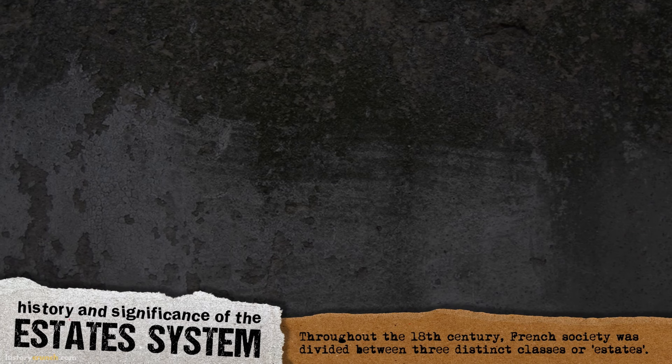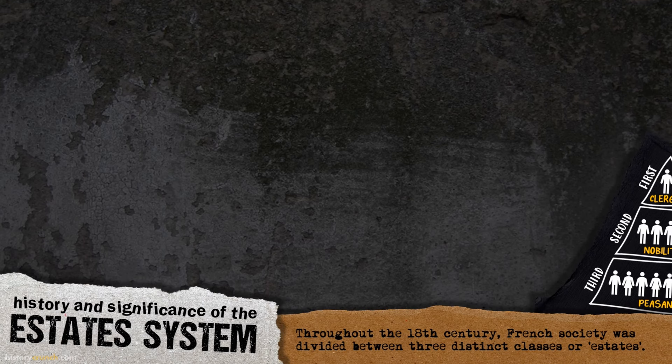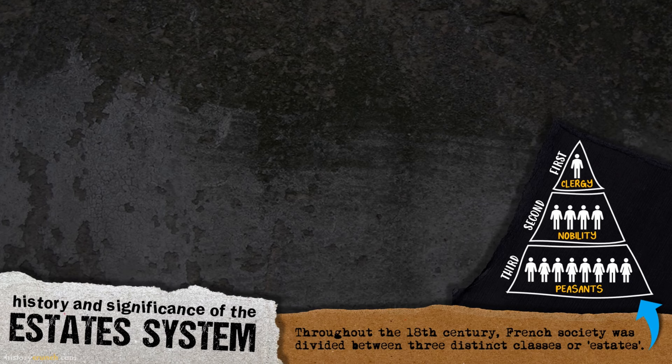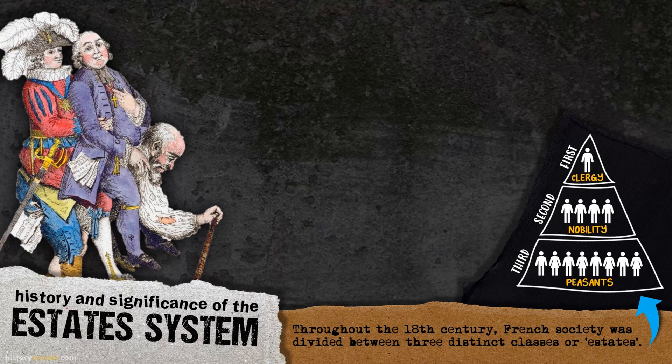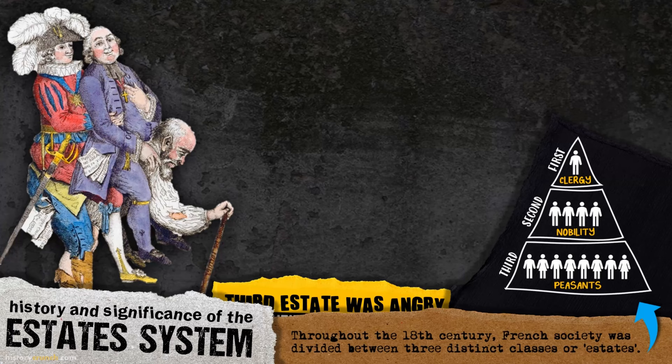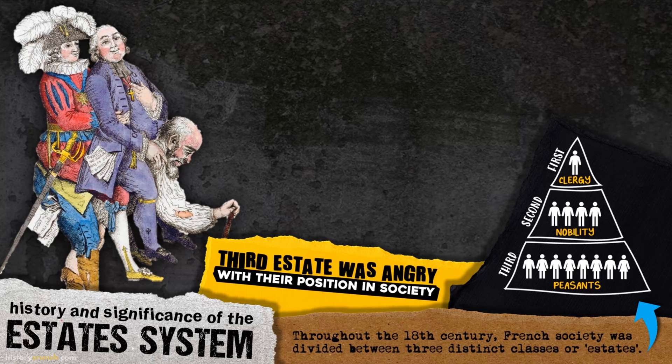The second main cause was the history and significance of the estate system in France. Throughout the 18th century, French society was divided between three distinct classes or estates. The first estate was made up of the Roman Catholic clergy, numbering about 100,000 in the 1780s, including monks, nuns, parish priests, and bishops. The second estate consisted of the French nobility, numbering about 400,000, who were wealthy and had many feudal privileges. All other people in France — about 98% of the population — belonged to the third estate. They paid most of the taxes but had the least power, and resented the position of the first two estates.